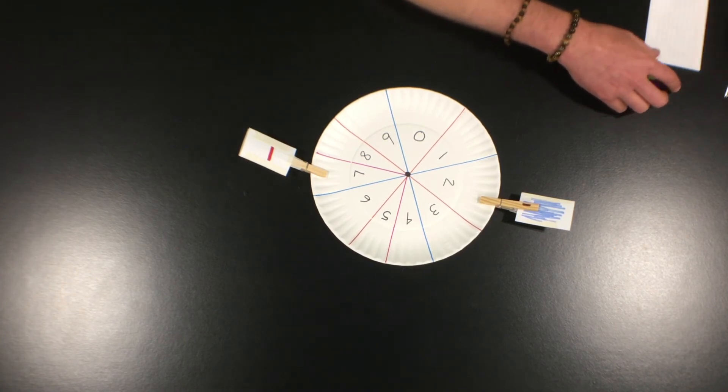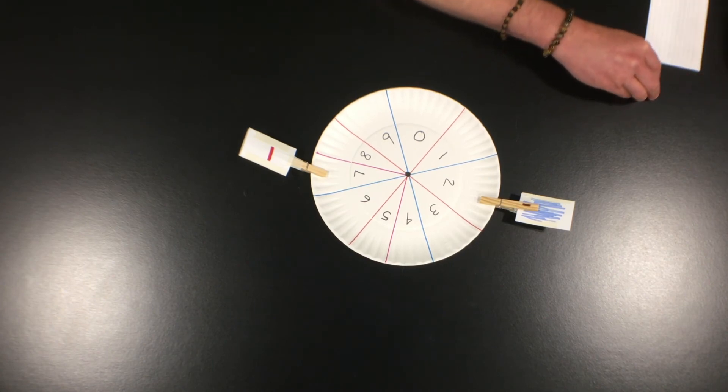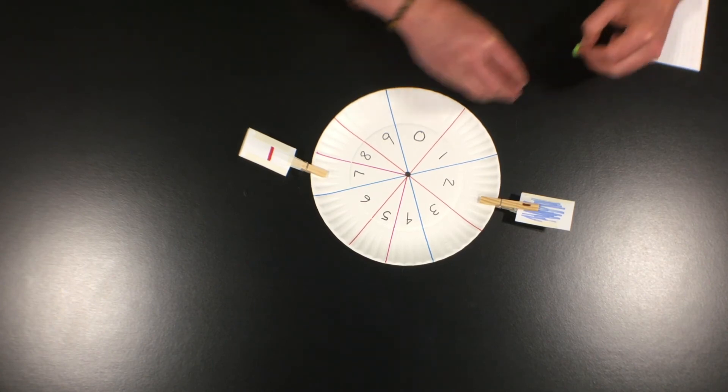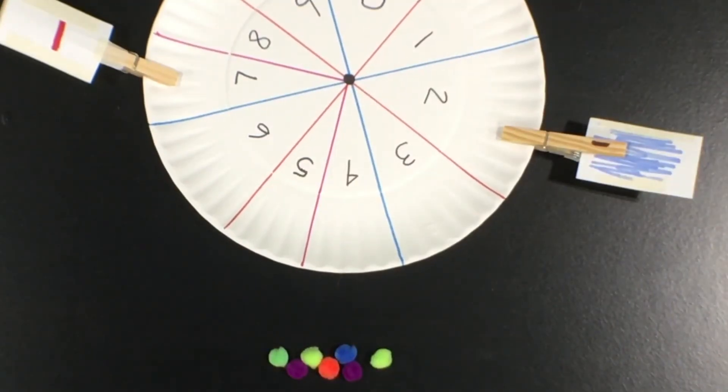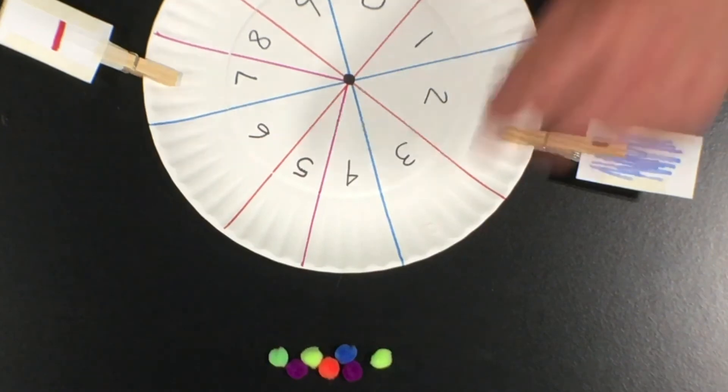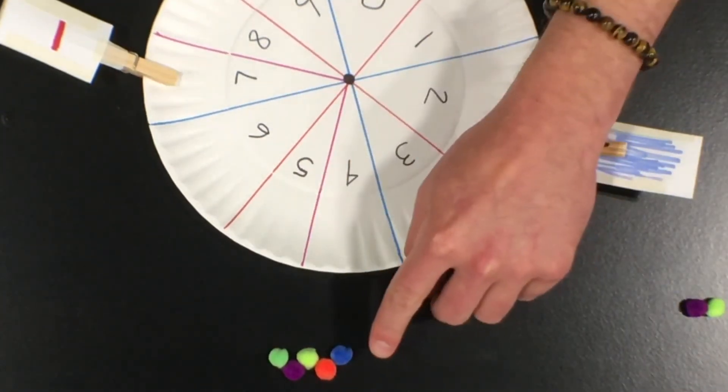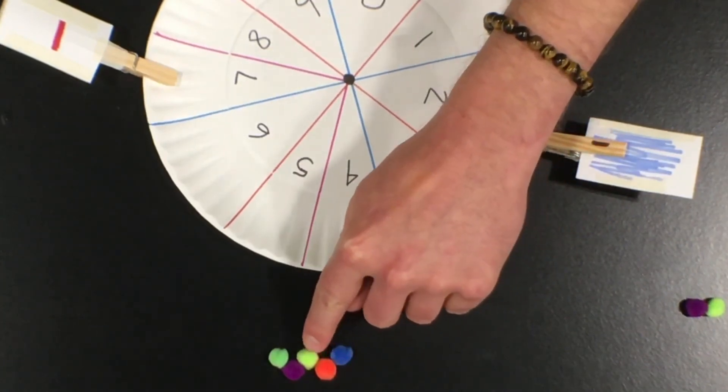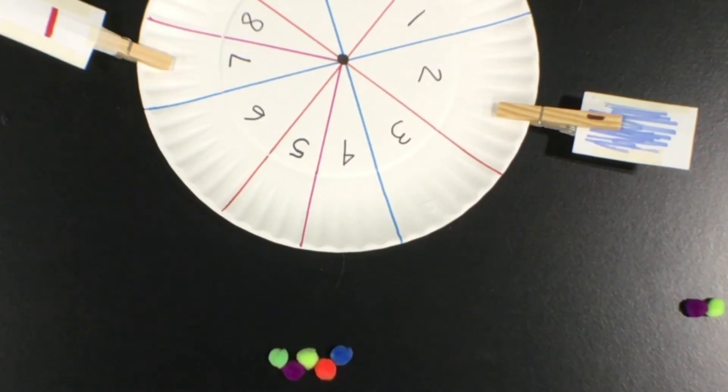If you've been using your word wallet, you might know that seven minus two equals five. But if you still need some practice, you can use your manipulatives again. Count out seven pom-poms like we've done here and then take two away and then count the remaining pom-poms. One, two, three, four, and five. Seven minus two equals five. Great job.